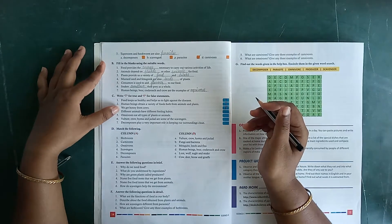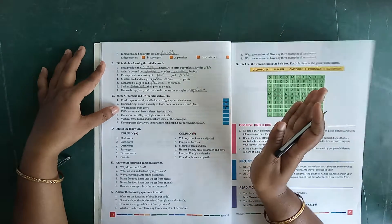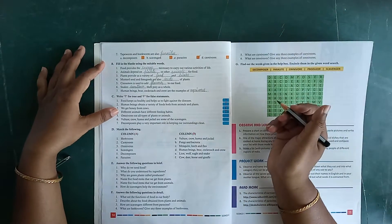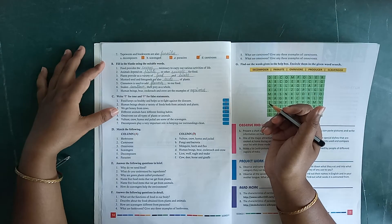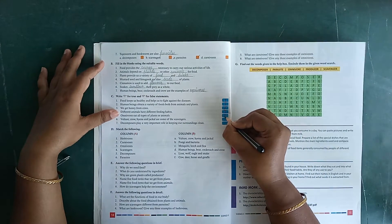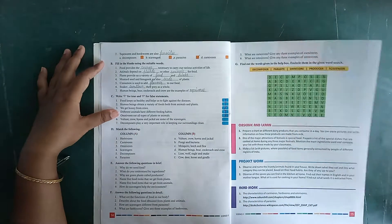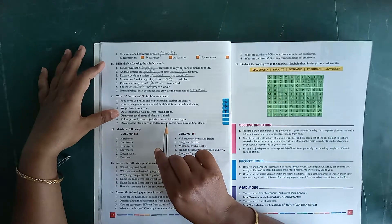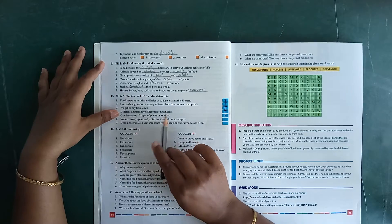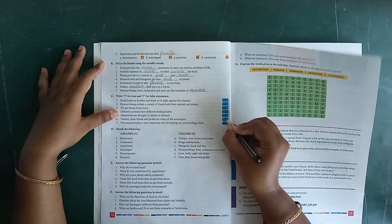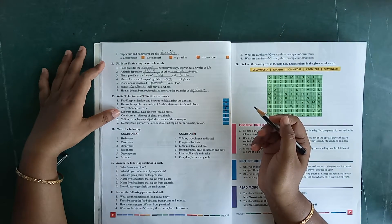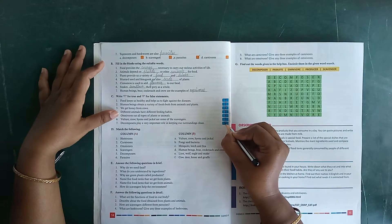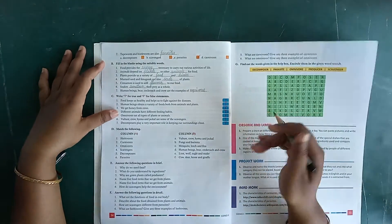Different animals have different feeding habits. That's true, write down T. Omnivores eat all types of plants and animals. False. Vulture, crow, hyena and jackal are some of the scavengers. It's also true, T. And the last one, seven. Decomposers play a very important role in keeping our surroundings clean. It's true.